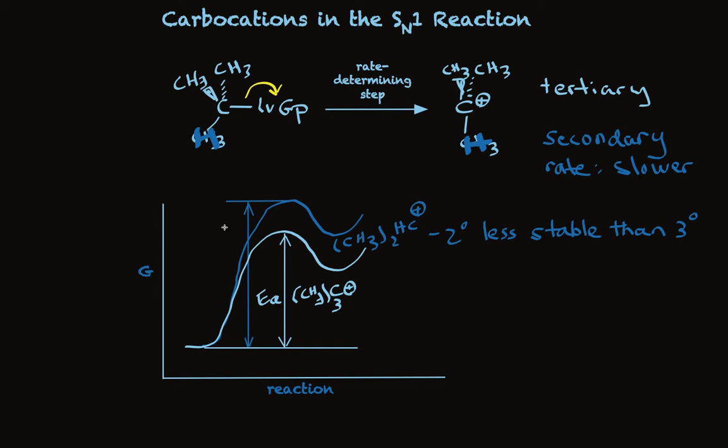So here's the activation energy for the formation of the secondary carbocation. It's greater, and that's why the rate is slower. But why is it greater? It's greater because the transition state of this step is less stable. And why is the transition state less stable?